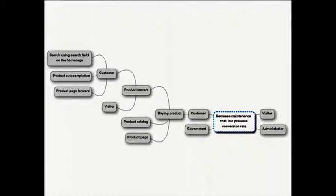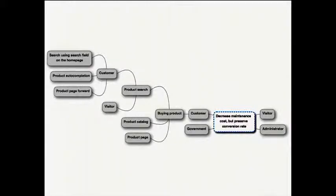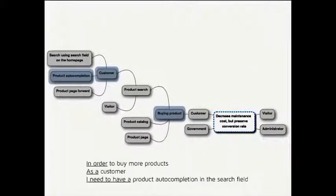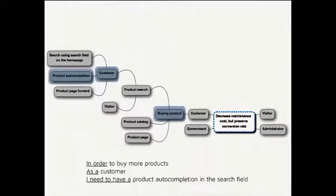The result looks something like this — a combined impact map plus feature map. You have your goal in the center from the impact map: decrease maintenance cost but preserve conversion rate. Then you have factors and actors from the impact map — for example, a customer who can buy more products, preserving conversion rate. Then you have product search going into the feature map: customer and visitor as described. And the cool part: if you look at the specific nodes, this is your user story — your agile user story, the best-in-class way to describe your backlog. You have connection with your business goal, your actor, and the benefit you're trying to bring. Everything is there.